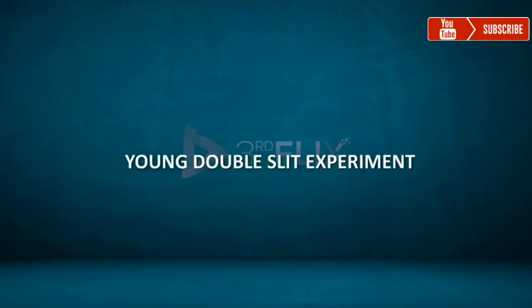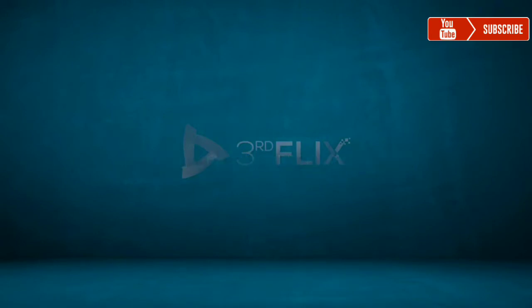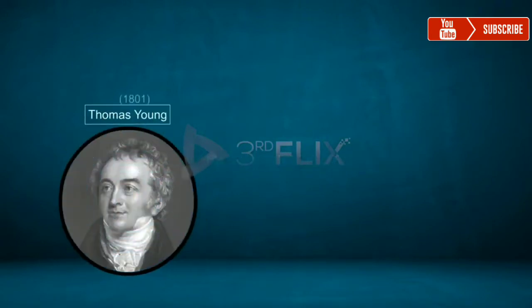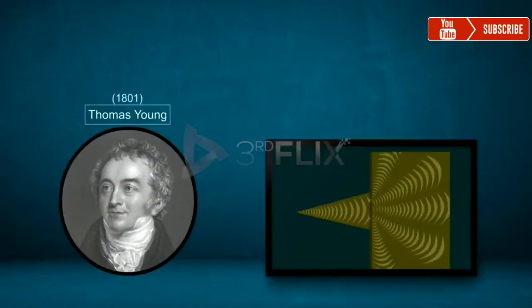Young's Double Slit Experiment. In the year 1801, scientist Thomas Young discovered the interference of two light waves experimentally.